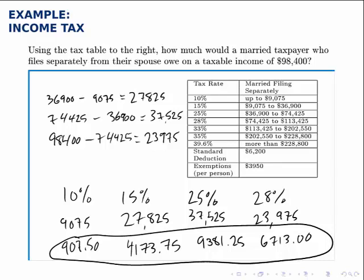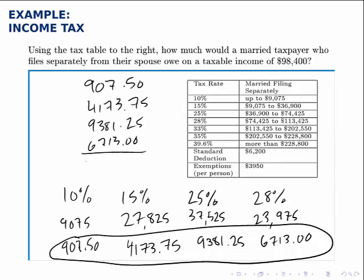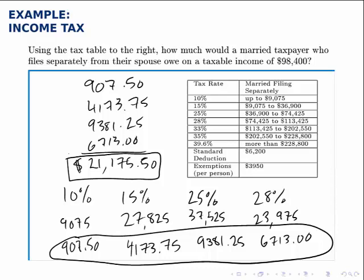Our final step is to add these four amounts together. Adding them up, we get a total of $21,175.50 — that is the final tax owed. The whole process boils down to splitting the taxable income into the different brackets, figuring out how much goes into each bracket, taking the appropriate percentage of each amount, and adding up all those taxes owed.